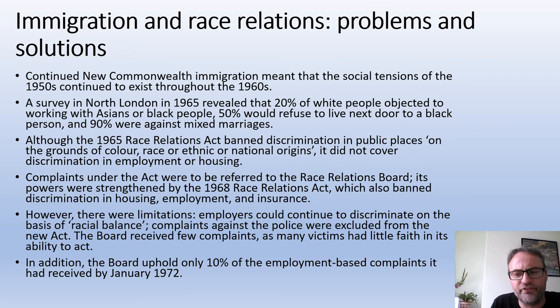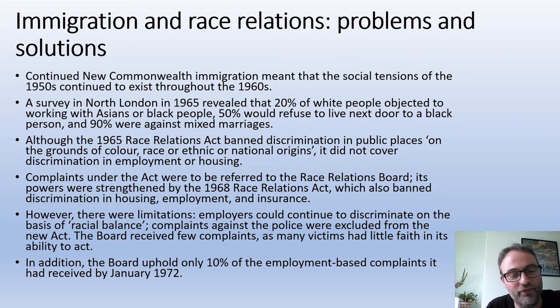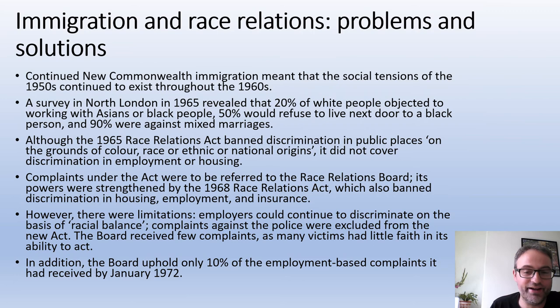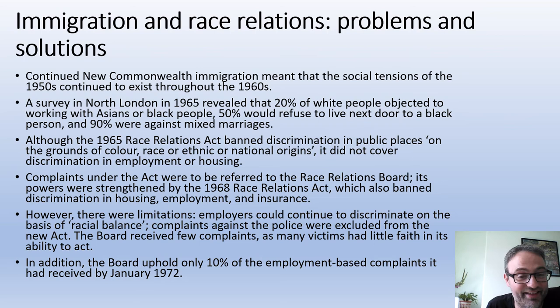Nevertheless, there were limitations. Employers could argue that they had to preserve racial balance — in other words they still had to employ plenty of white people — a loophole that could be used to justify discriminating. Also, the one group you couldn't complain against was the police, which caused real problems. Victims of race-based crime and discrimination increasingly thought the Race Relations Board wouldn't do anything, so the board didn't receive that many complaints.